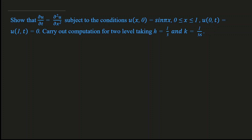Hello students, welcome to my class. In today's class I am going to solve one more important example on the heat equation. The given example is: show that ∂u/∂t = ∂²u/∂x², subject to the conditions u(x, 0) = sin(πx), where x lies between 0 and 1, and boundary conditions u(0, t) = u(1, t) = 0. Carry out computation for two levels taking h = 1/3 and k = 1/36.